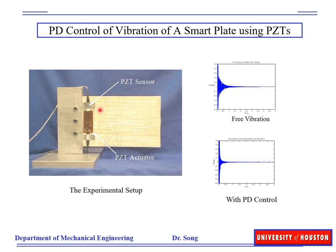First we will look at the proportional plus derivative control of a plate. This is a piezo-ceramic patch, and we have a small piezo-ceramic one as a sensor. We use a proportional plus derivative control for vibration. This is a free vibration and the vibration can be reduced. This is not the best control for vibration, but the derivative part helped to reduce the vibration and increase the damping of the system.